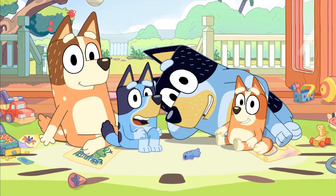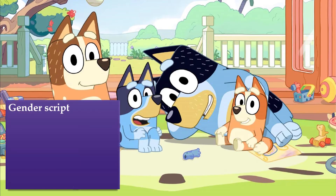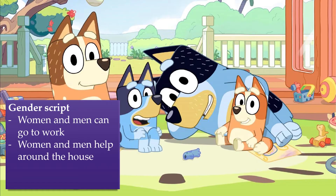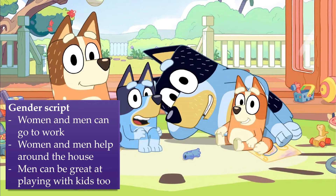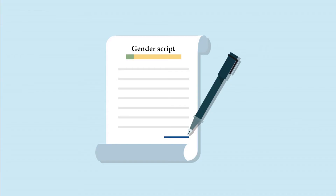On the other hand, a show like Bluey might introduce kids to a different gender script. By observing the characters, they might subconsciously start to think that women and men can both go to work, both help out around the house, and men can be great at playing with kids too. As children get older, these gender scripts and schemas become less and less malleable, and we even start to ignore things that contradict them. Gender schema theory explains why gender roles are stable in society and rarely change after middle childhood.